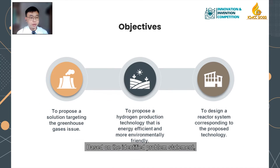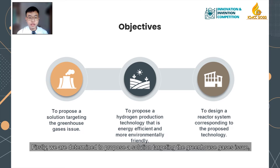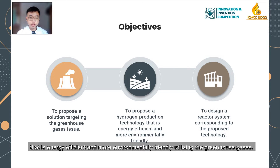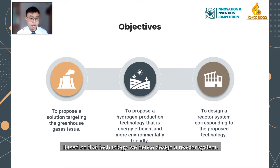Based on the identified problem statement, three objectives are determined. Firstly, we are determined to propose a solution targeting the greenhouse gases issue, which can be a hydrogen production technology that is energy efficient and more environmentally friendly, utilizing greenhouse gases. Based on that technology, we hence designed a reactor system.